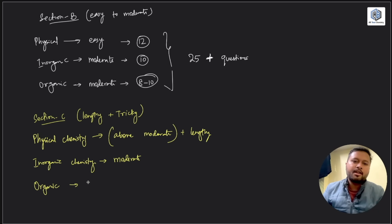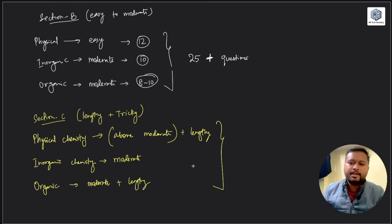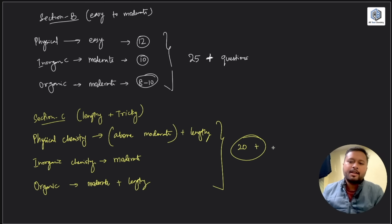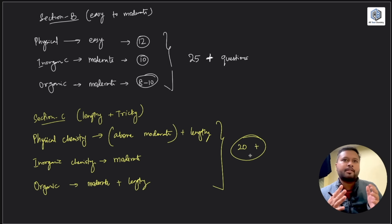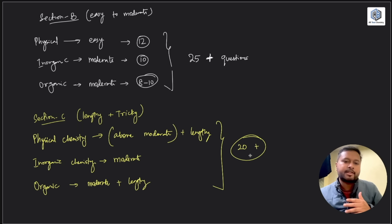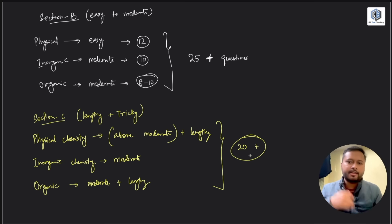Organic Chemistry in Section C was relatively lengthier with some very direct questions — consider it moderate plus lengthy. In Section C, doing 20 or more questions was a plus. To attempt 20 questions, you might have taken more than 90 minutes, some even two hours, meaning less time for Section B, which would affect the overall cutoff.